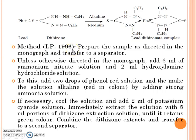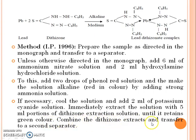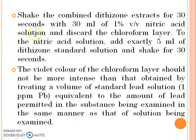Method according to IP 1996: Prepare the sample as directed in the monograph. Add 6 ml of ammonium nitrate solution and 2 ml of hydroxylamine hydrochloride solution. Add 2 drops of phenol red solution and make the solution alkaline (red in color) by adding strong ammonia solution. If necessary, cool the solution and add 2 ml of potassium cyanide solution. Immediately extract the solution with 5 ml portions of dithizone extraction solution until it returns to green color. Combine the dithizone extracts and transfer to a second separating funnel. Shake the combined dithizone extract for 30 seconds with 30 ml of 1% v/v nitric acid solution and discard the chloroform layer.